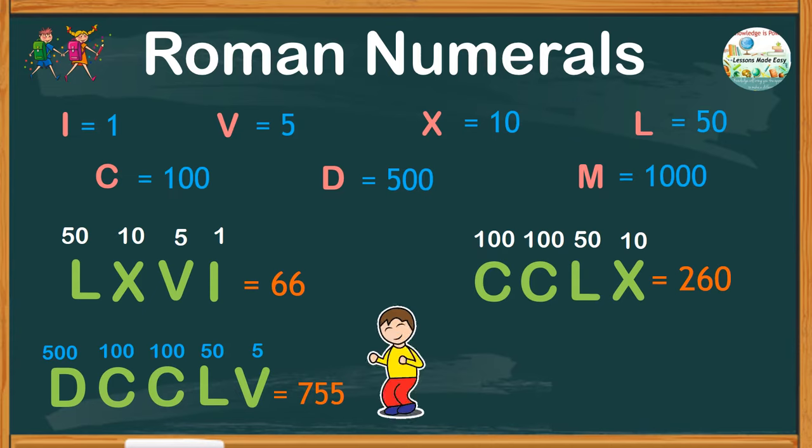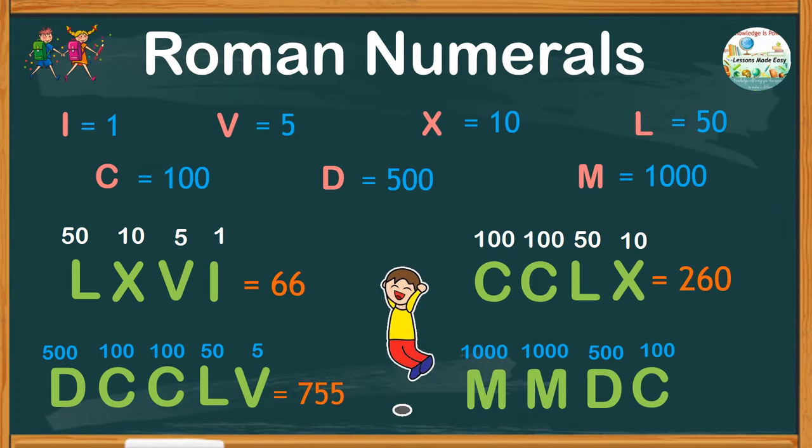What about this one? M, M, D, C. M is for 1000, we have two of them. D is 500, and C is 100, altogether gives us 2,600.